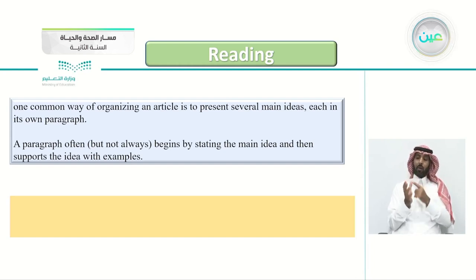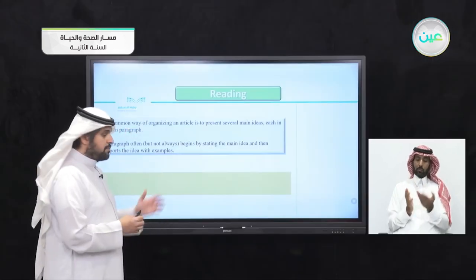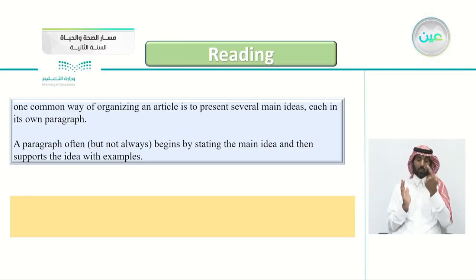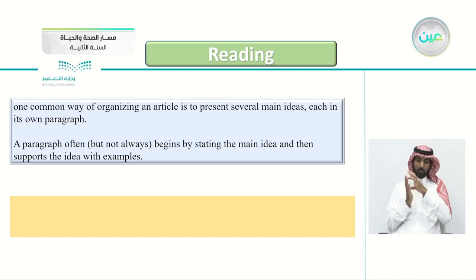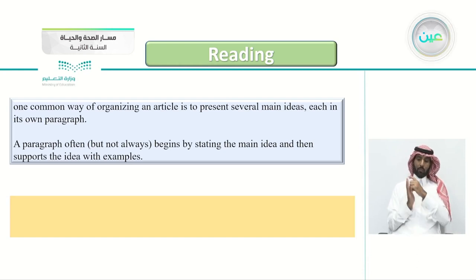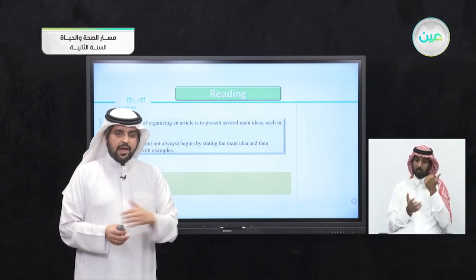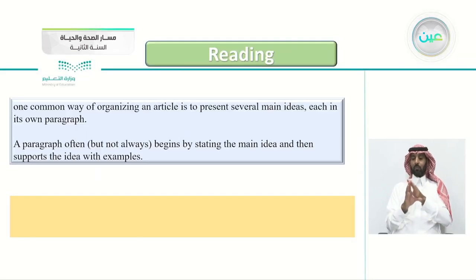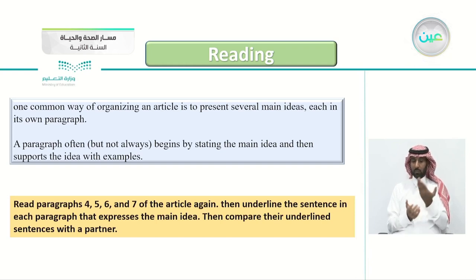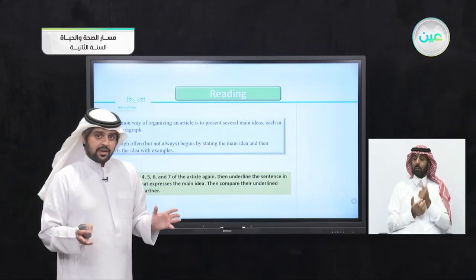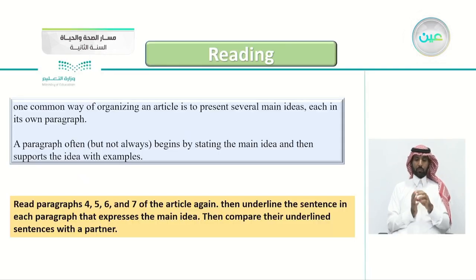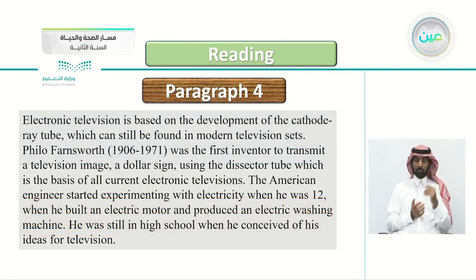One common way of organizing an article is to present several main ideas, each in its own paragraph. A paragraph often — but not always — begins by stating the main idea, then supports it with examples. Read paragraphs four, five, six, and seven of the article again, then underline the sentence in each paragraph that expresses the main idea. We'll look at which sentence expresses the main idea. Can you tell where the main idea sentence is in paragraph four? It doesn't have to be the first sentence.